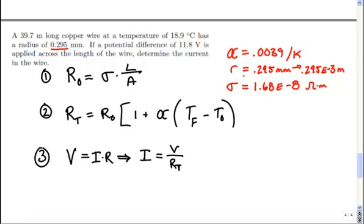So we're going to need three different equations here to solve this question. The first equation up here tells us that the resistance, the original resistance is equal to the resistivity times the length over the cross sectional area. So we've seen this equation before in the past.